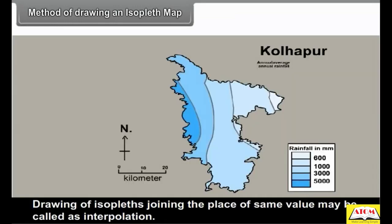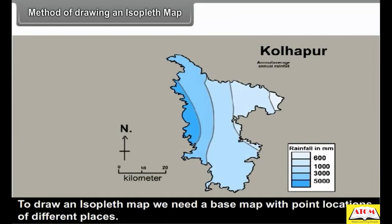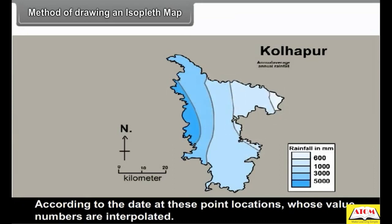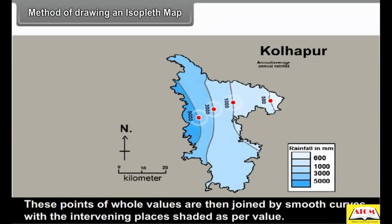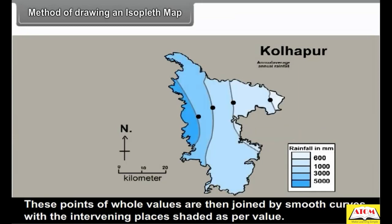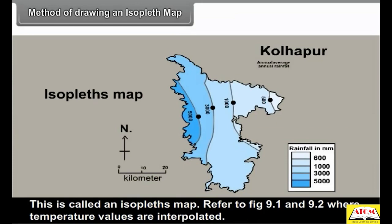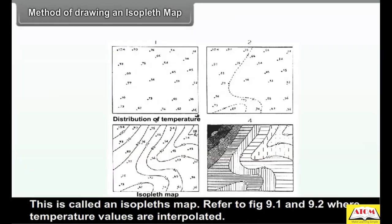Methods of drawing an isopleth map: Drawing isoplets joining the places of the same value may be called interpolation. To draw an isopleth map, we need a base map with point locations of different places. According to the data at these point locations, values are interpolated. These points of whole values are then joined by smooth curves, with the intervening places shaded as per the value. This is called an isopleth map. Refer to figures 9.1 and 9.2 where temperature values are interpolated.